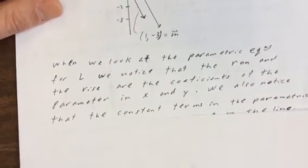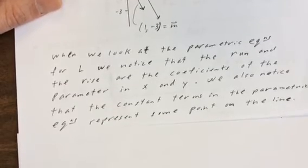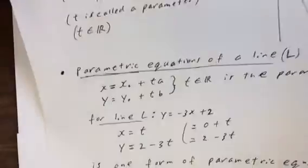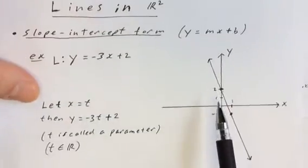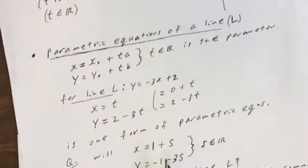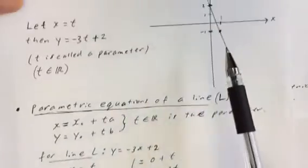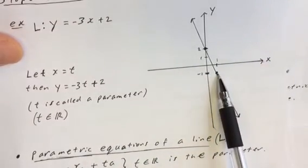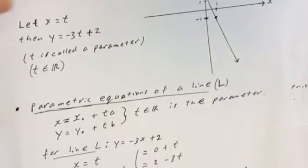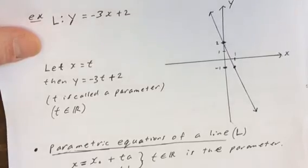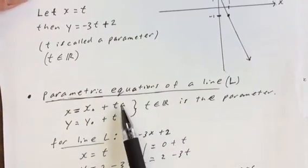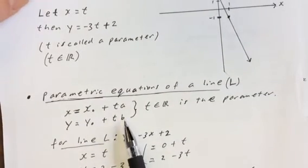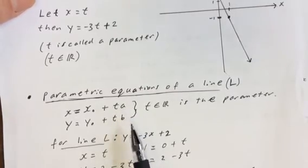The constant terms in the parametric equations represent some point on the line. In the first form, (0, 2) is the y-intercept — a point on the line. In the second form, (1, negative 1) is also a point on the line. We could use any other point on the line for x-naught and y-naught. So x-naught and y-naught are any point on the line, and a and b come from the direction vector — a is its x-coordinate and b is its y-coordinate.